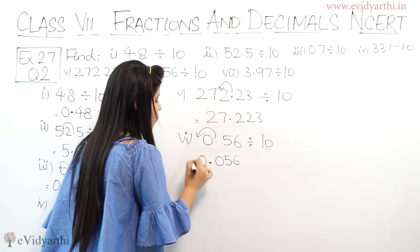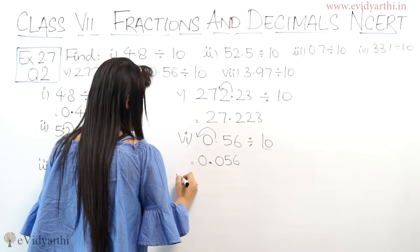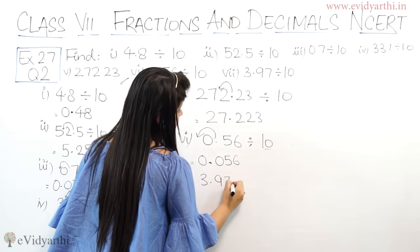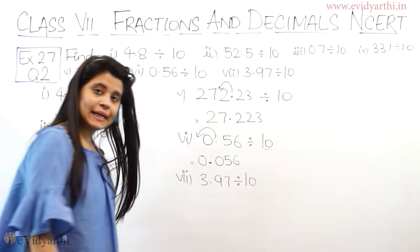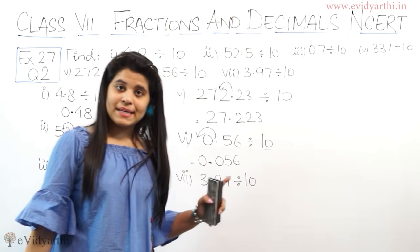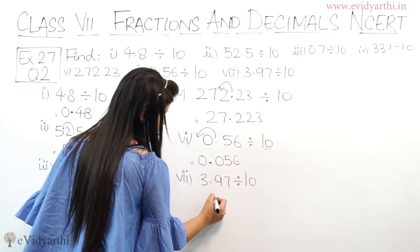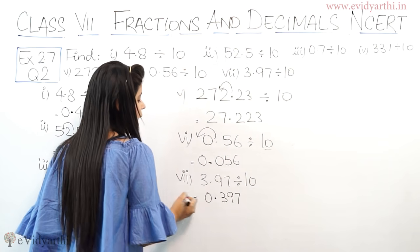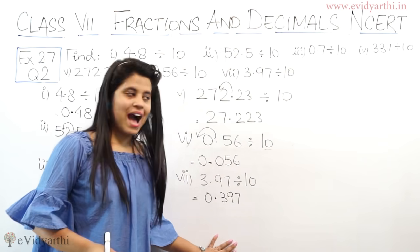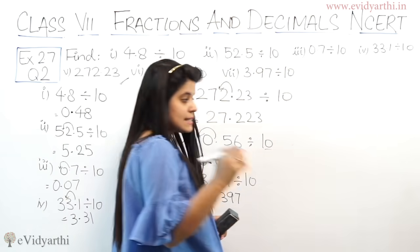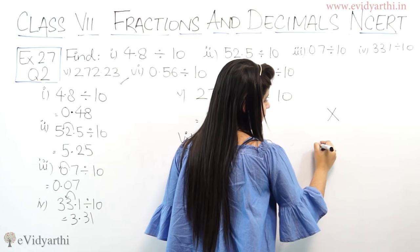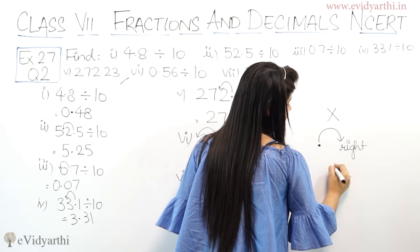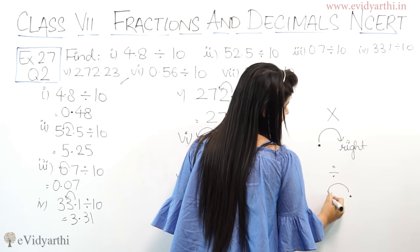So the answer will be 0.056. So the answer will be 0.056. So yaha jayega yaha pe. So it'll be 0.156. So the answer will be 0.